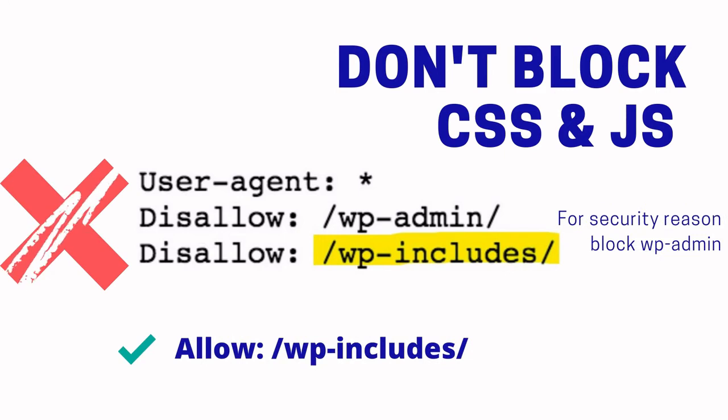If you have listed some URLs under the robots.txt file, Google won't crawl those URLs. However, sometimes Google may still crawl a URL if it is referred to by some other page. So there are chances Google will crawl URLs listed under robots.txt disallow. If you want to block a URL from Google's index, the best way is to use the meta robots tag set to noindex. The best use of the robots.txt file is to allow Google to access your CSS and JavaScript files.